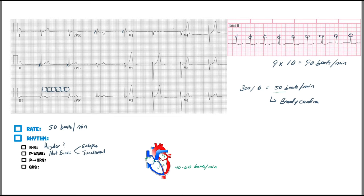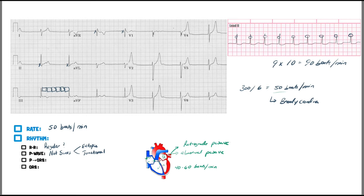Another possibility is an atrial ectopic focus in the left or right atrium generating its own action potentials, but that rate is usually a bit higher and typically produces an abnormal or retrograde P wave. Given the rate is around 40 to 60 bpm, there's no visible P wave and no retrograde P wave, so I'm leaning toward a junctional rhythm.